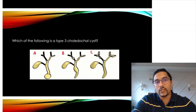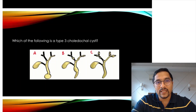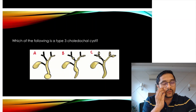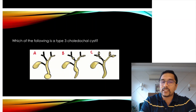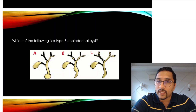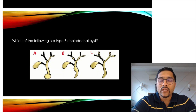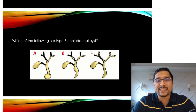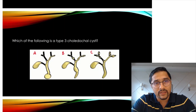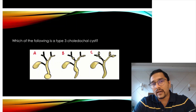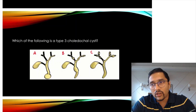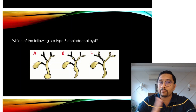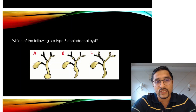A new topic asked in the exam — choledochal cyst — had two or three questions with images shown. This time the surgery paper was slightly tricky; it wasn't as easy as previous years, and the level of difficulty was higher, which is why the pass percentage has dropped. The exam is becoming more and more clinical and you need to be better equipped.